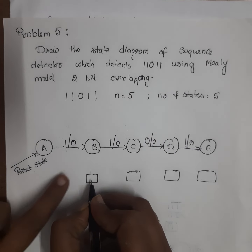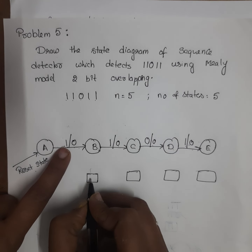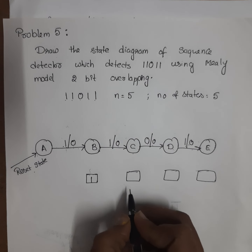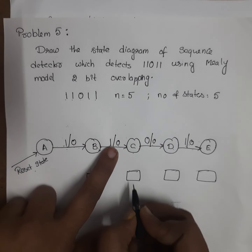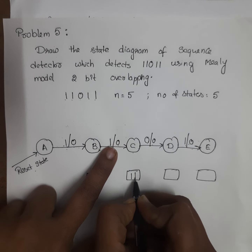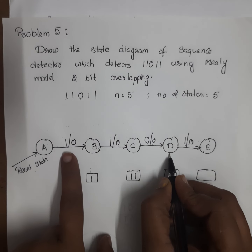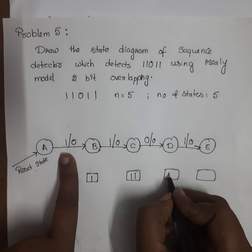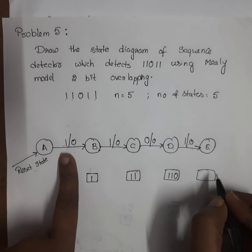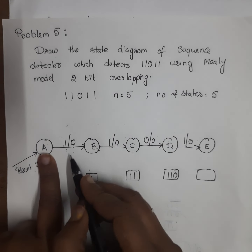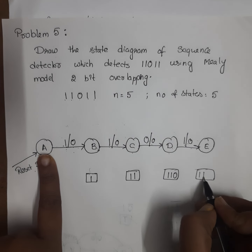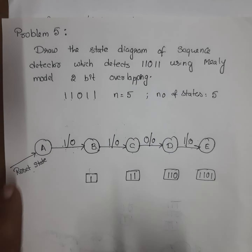Write the bits detected at each state. Here 1 is detected at the first state. For state B, the bits detected are 1, 1. For the D state, the bits detected are 1, 1, 0, 1, and 1, 0, 1. So this is the second step.